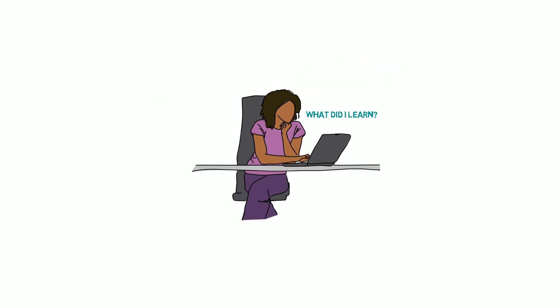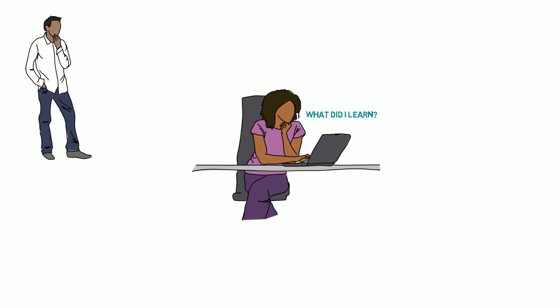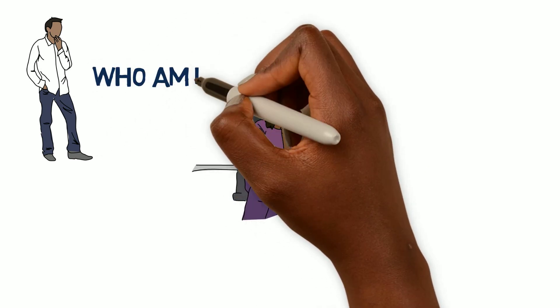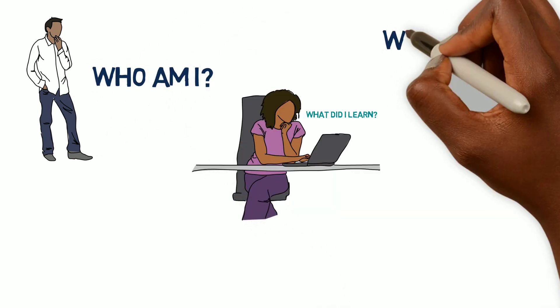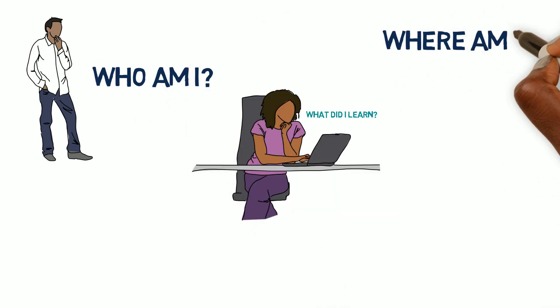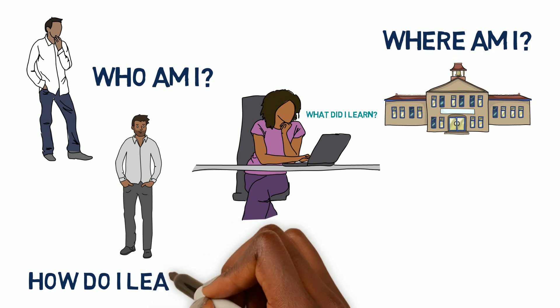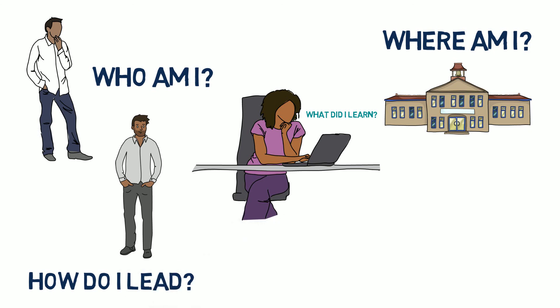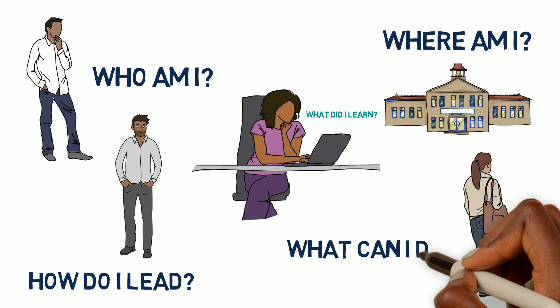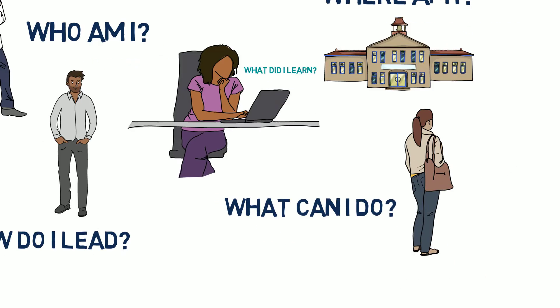You'll need to include a personal assessment that answers the question: who am I? Then you'll answer the question where am I by looking at your school's organizational structure. You'll reflect on how you're currently influencing your school by answering how do I lead? And finally, you'll include your action research plan to answer the question: what can I do?